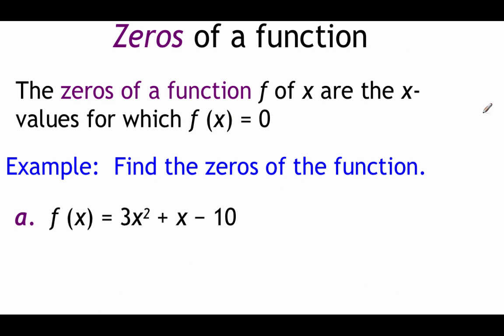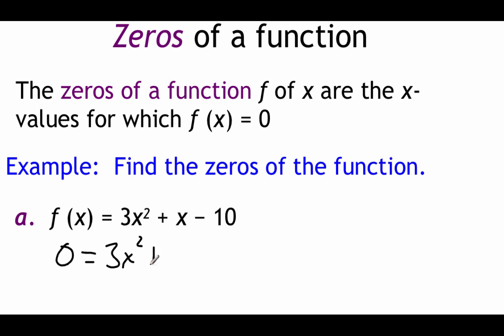Next topic: finding the zeros of a function. The zeros of a function f(x) are the x values for which f(x) equals zero. When finding zeros algebraically, we take whatever our function is, set it equal to zero, and solve for x. Looking at the example: f(x) = 3x² + x - 10. To find the zeros, we replace f(x) with zero: 0 = 3x² + x - 10. Now we're solving.